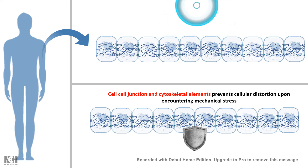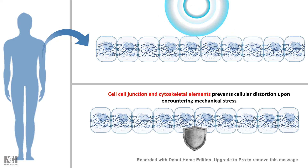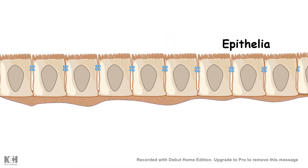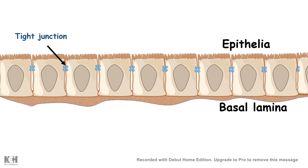Otherwise, upon experiencing extreme stretch, our epithelia would rupture — but that doesn't happen, thanks to these cell junction elements and cytoskeletal proteins. In this video, we are going to talk about one type of cell junction component known as the tight junction. The epithelial cell lies on the basal lamina and is connected to neighboring cells via several kinds of junctions, and in this installment we are going to focus on tight junction proteins.